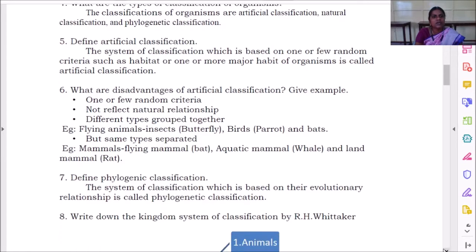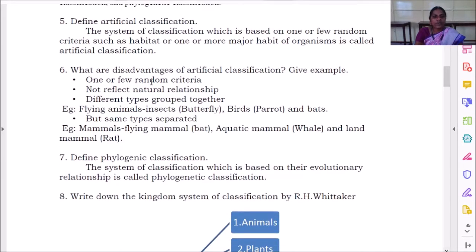What are the disadvantages of artificial classification? Give example. One or few random criteria is taken. It does not reflect natural relationship and it has different types grouped together. For example, flying animals like insects - example butterfly, birds - example parrot, and bats.